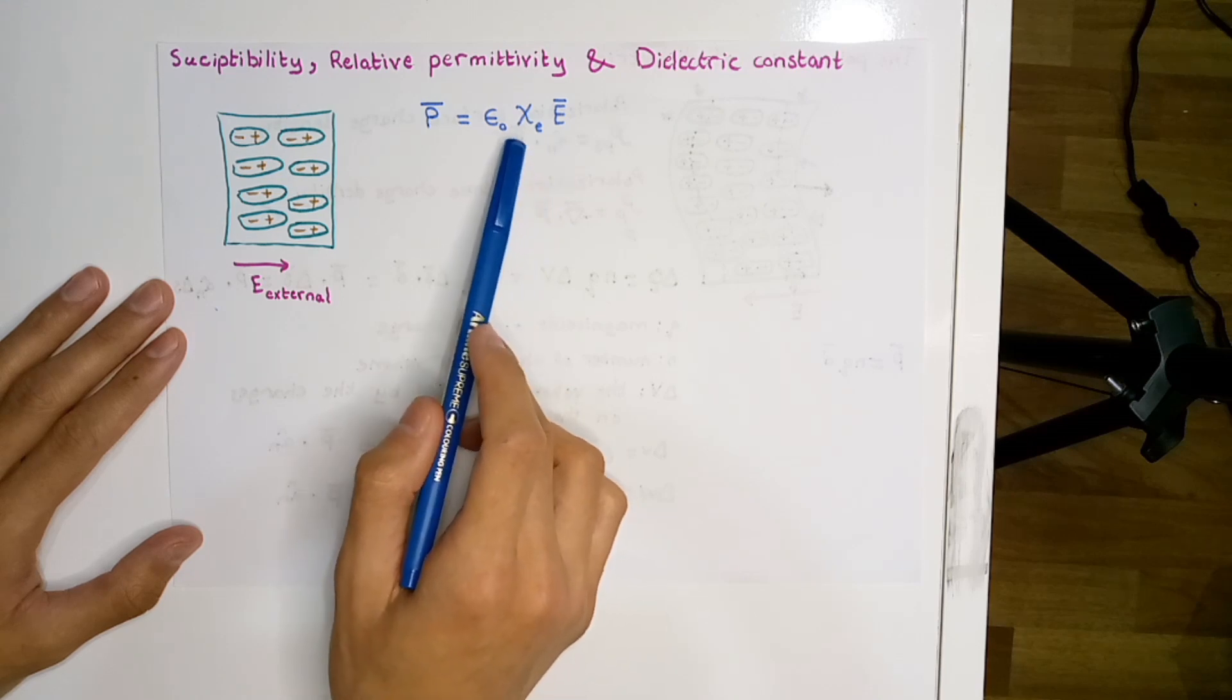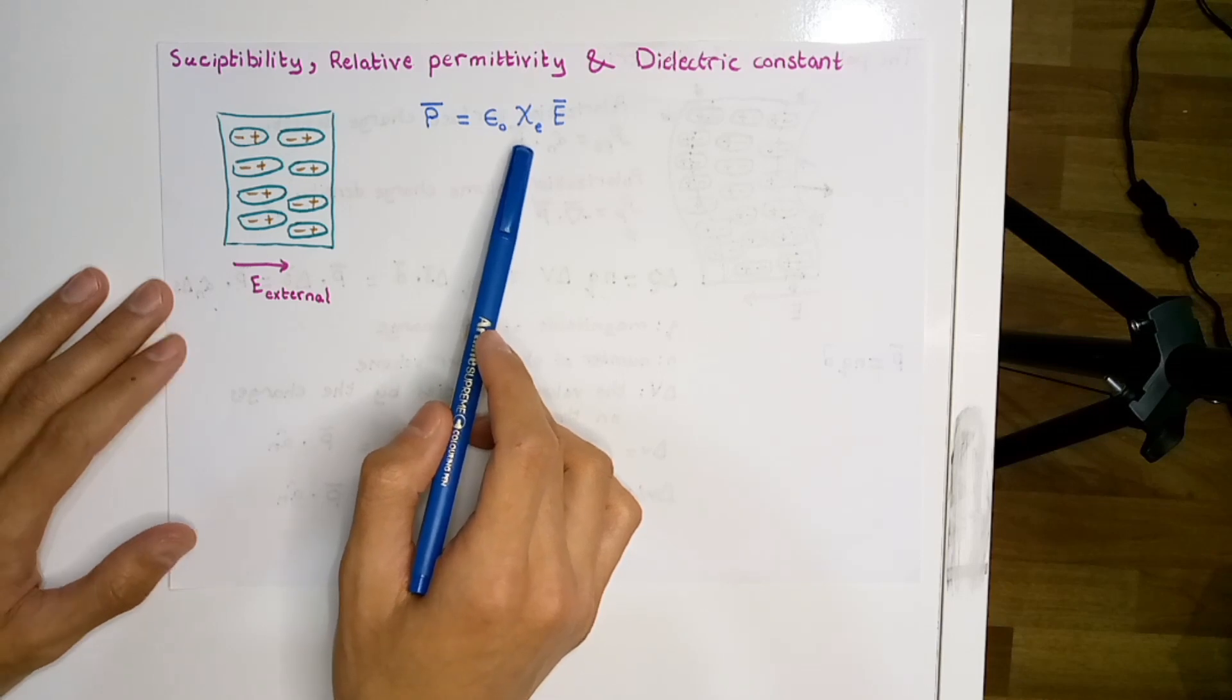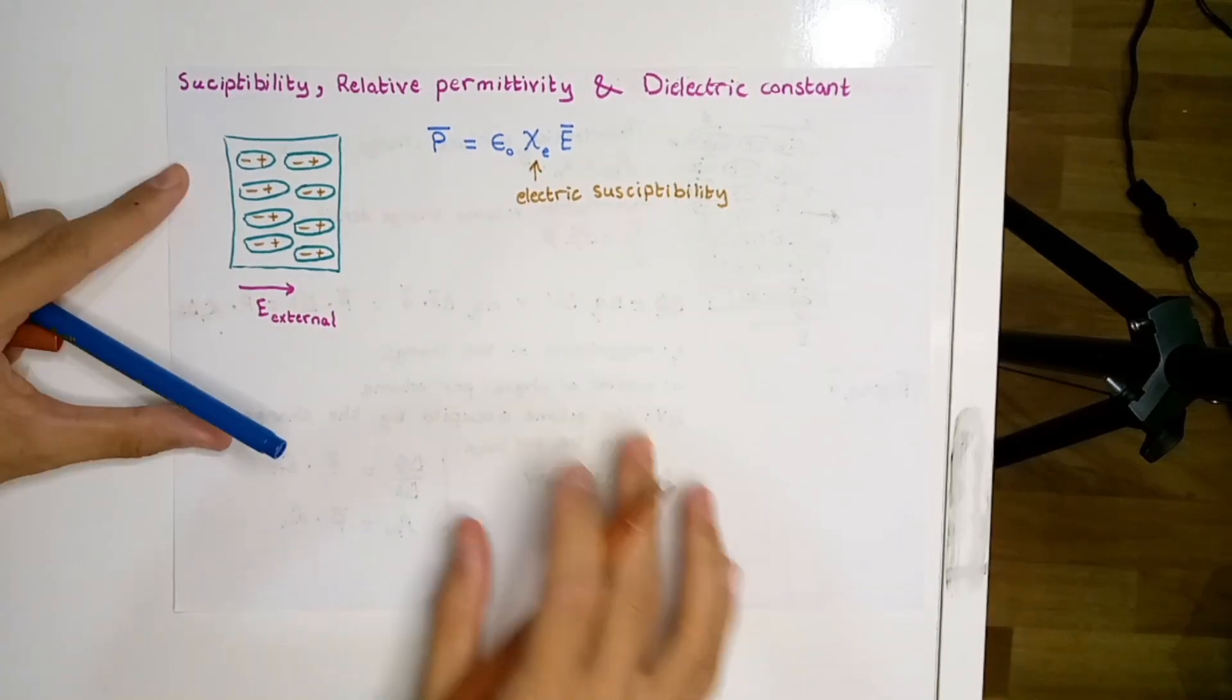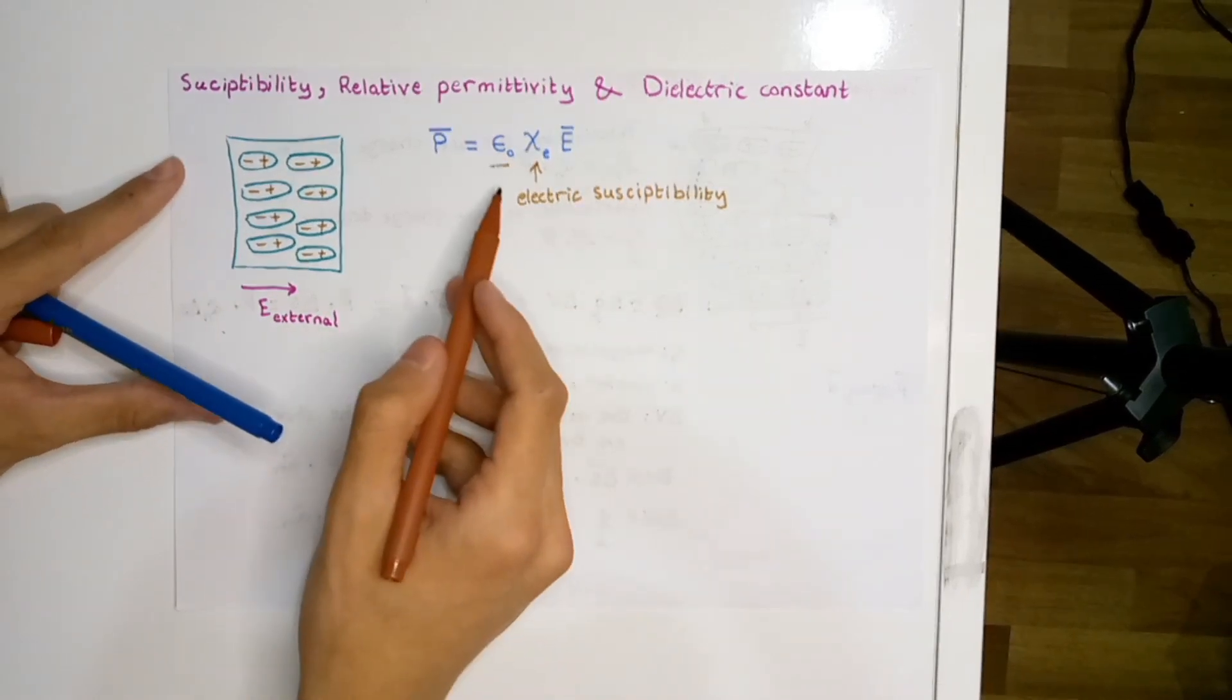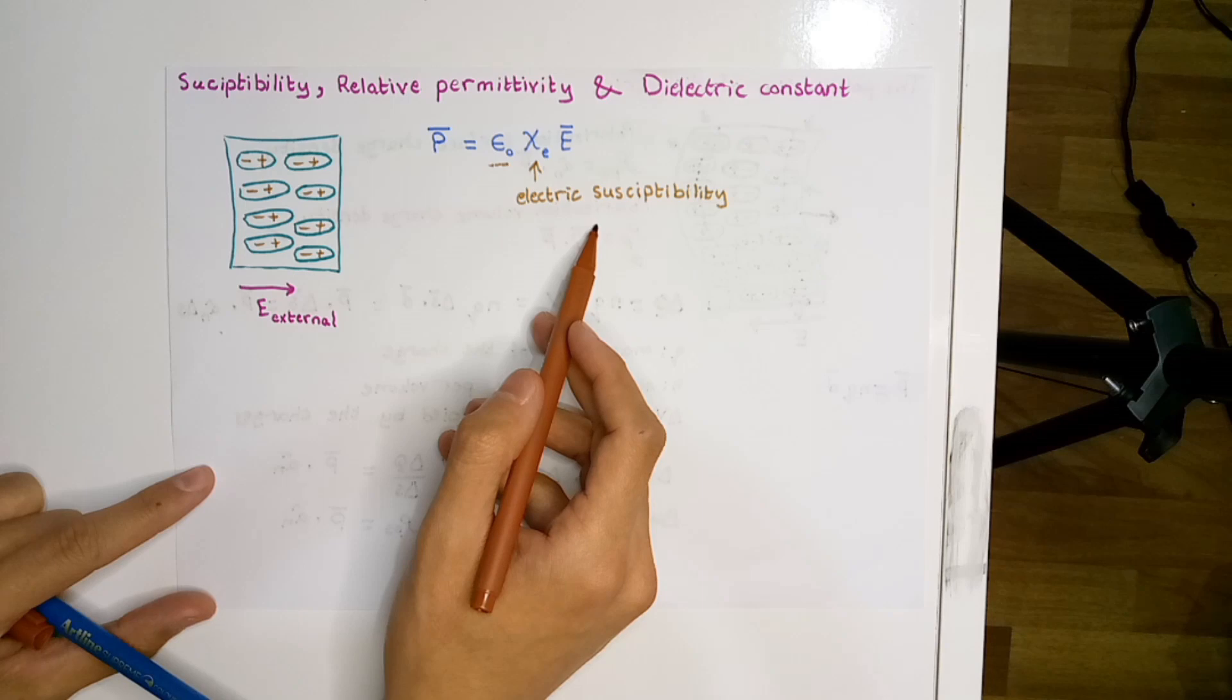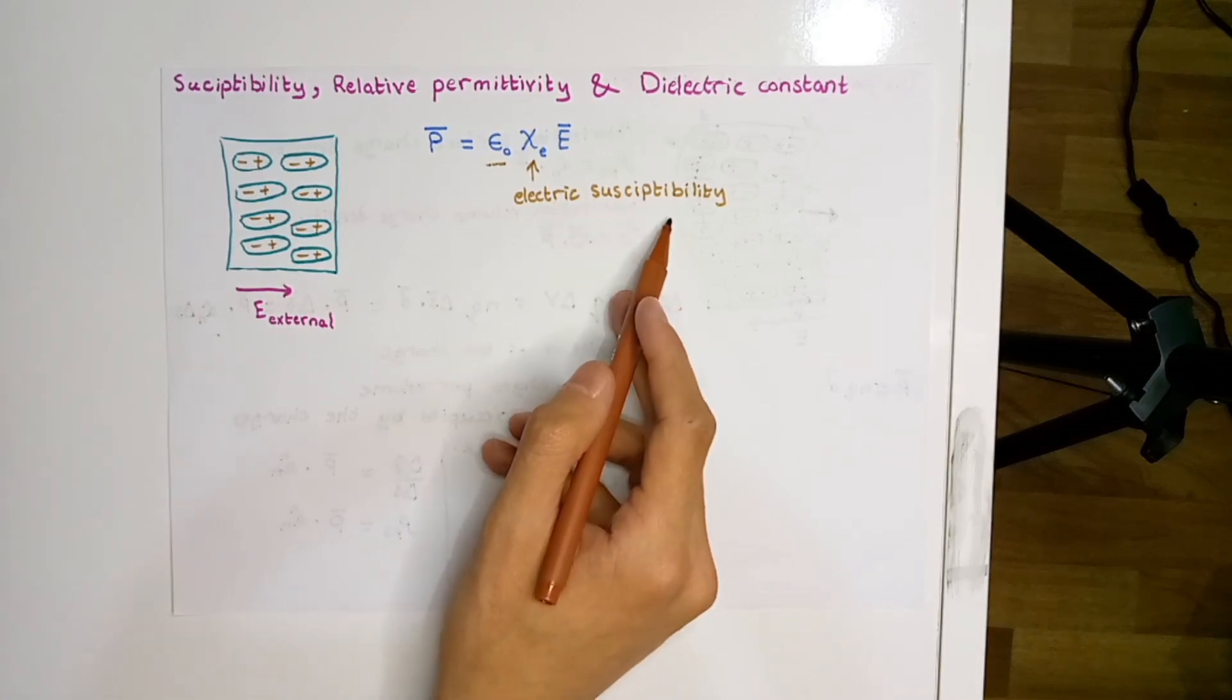This Greek letter, χₑ, which we usually call chi or key, this constant of proportionality is known by the electric susceptibility. From this equation we have extracted ε₀, the permittivity of free space, in order to make this factor dimensionless. The electric susceptibility is generally representing the degree of polarization of the dielectric material in response to the applied electric field.